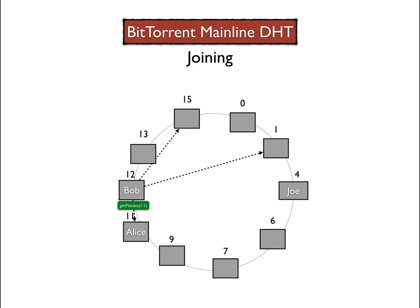Bob then examined the request and realized he is indeed the closest node to Alice, and therefore returns himself as the closest node. From Bob's answer, Alice now knows he is the closest to herself and stops looking for other nodes. Later on, while performing other regular operations such as finding the tracking information for some files, Alice will learn about other nodes in the network and will update her table of neighbors.